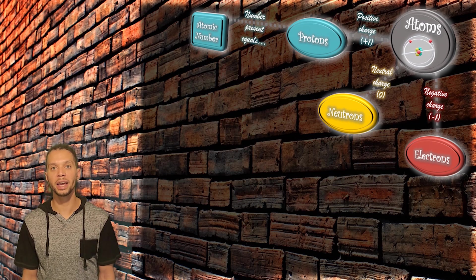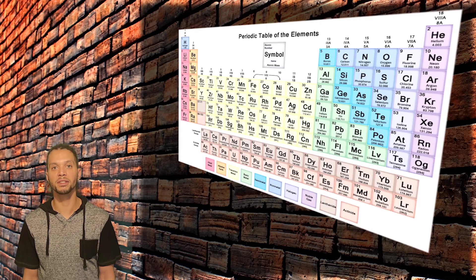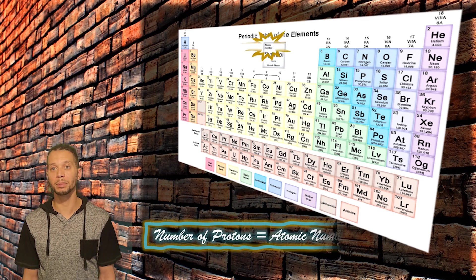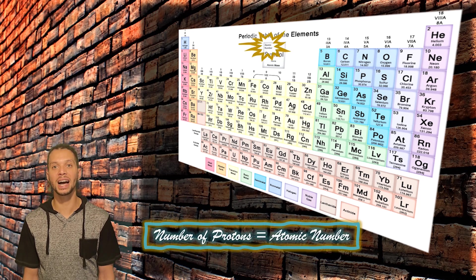The periodic table of elements is arranged based on the atomic number. And on this periodic table, we see this number in the top left corner of the box for that element.